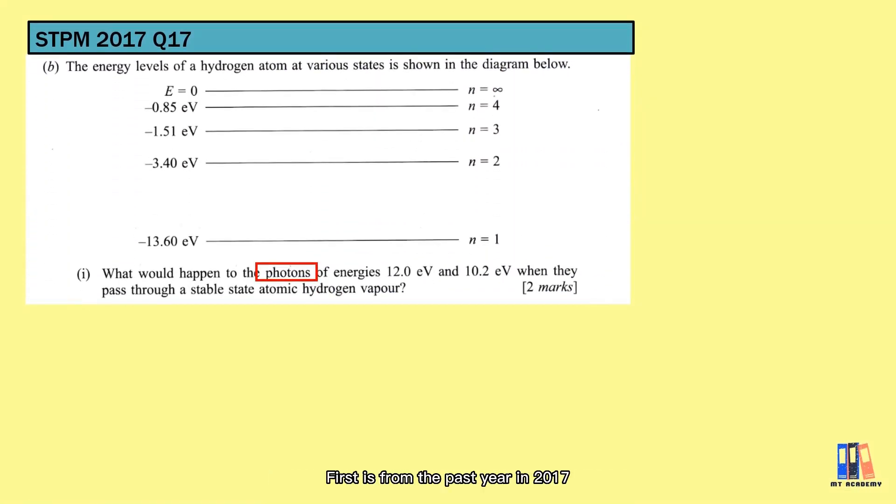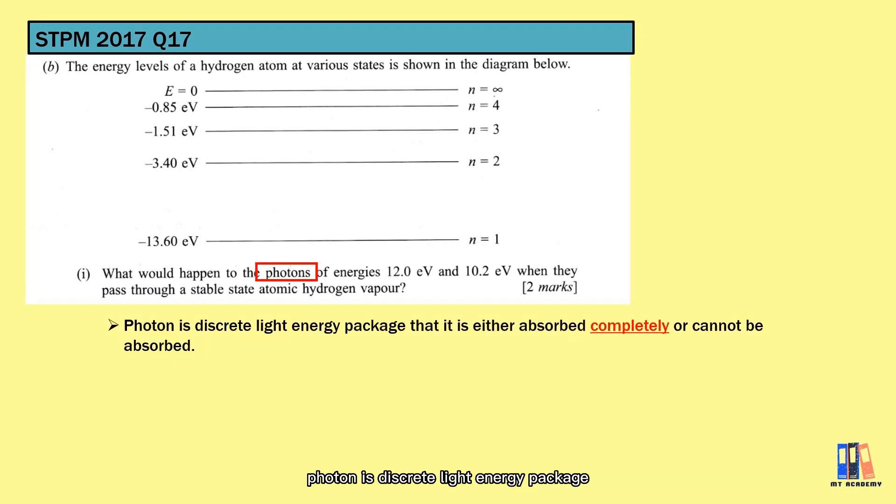First is from the past year in 2017. This is the energy level diagram for hydrogen atom. What will happen to the photon of energies 12 eV and 10.2 eV when they pass through a stable state atomic hydrogen vapor? So you need to remind yourself that photon is discrete light energy package. It is a discrete package that you can only either take it as a whole or not do anything about it. Before that, let's calculate the difference between energy levels. One is from the ground state to the first excited state which requires 10.2 eV. Next is from the ground to the second excited state that equals 12.09 eV.